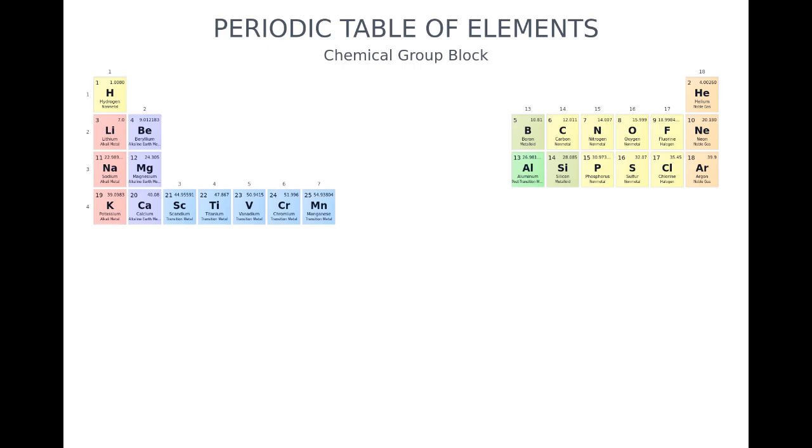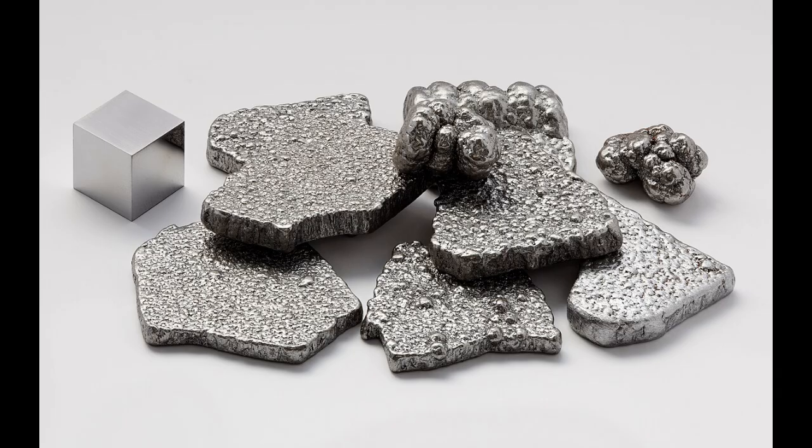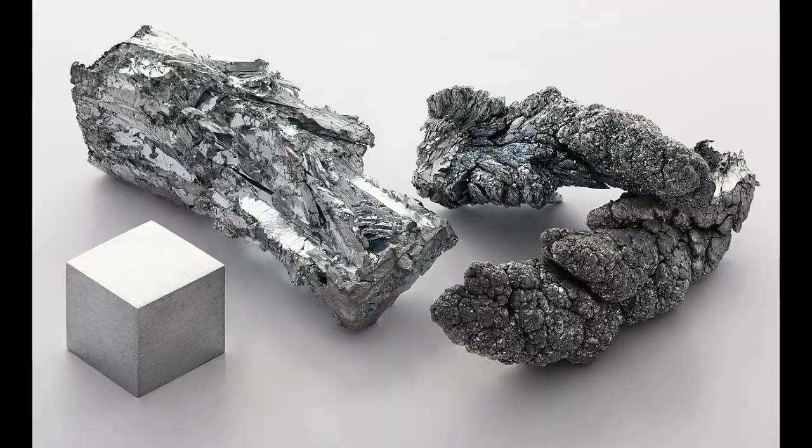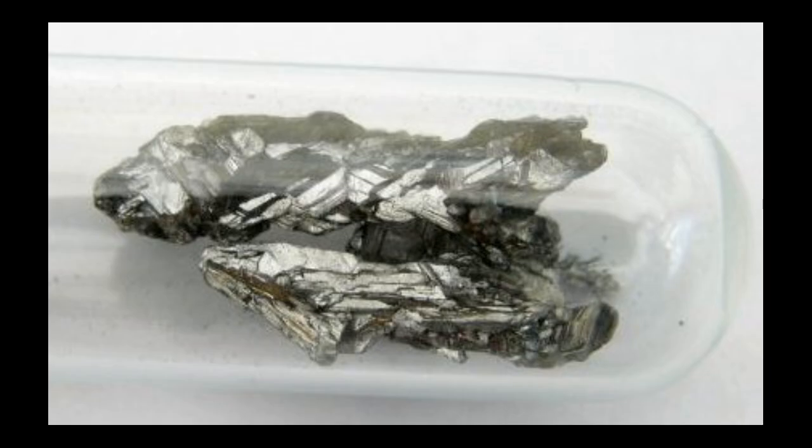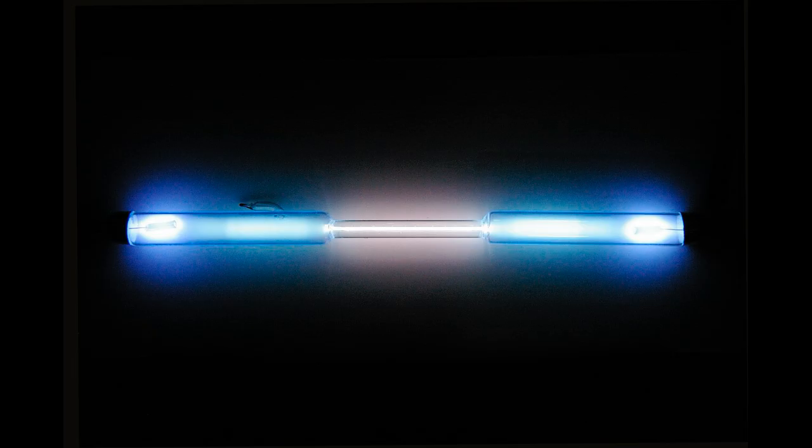Electrons are added moving to the right. Iron is the 26th, then cobalt, nickel coins, you get it, copper, zinc, gallium, germanium, and arsenic, selenium, and bromine film, krypton lights up your room.